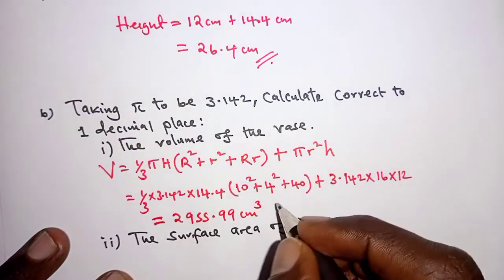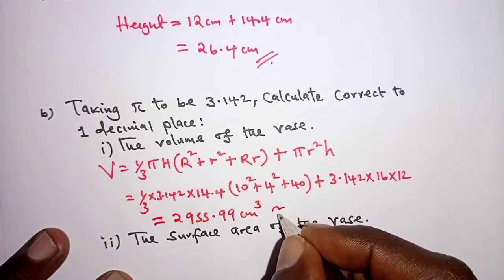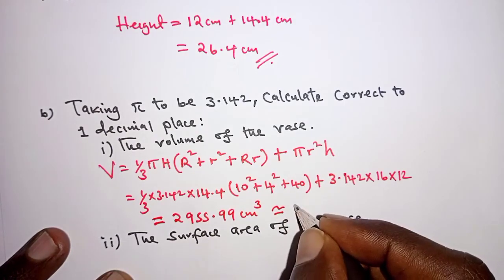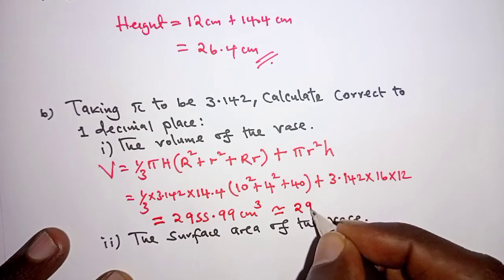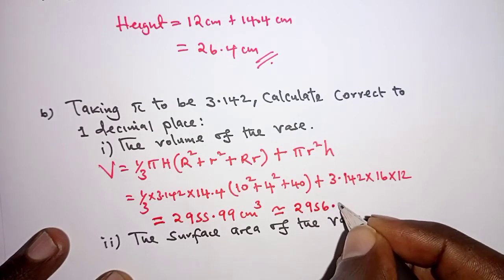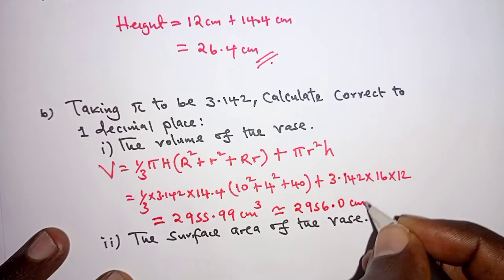and because we are asked to write this correct to one decimal place, this is 2956.0 cubic centimeters.